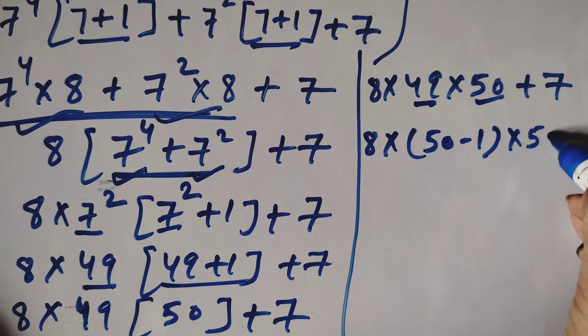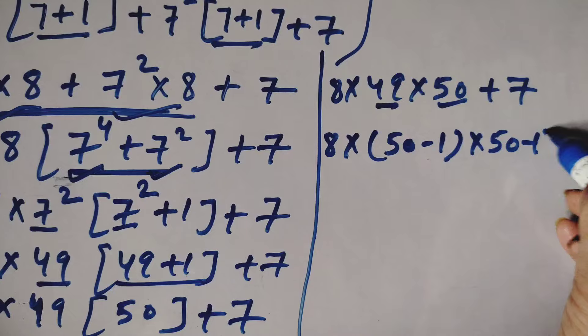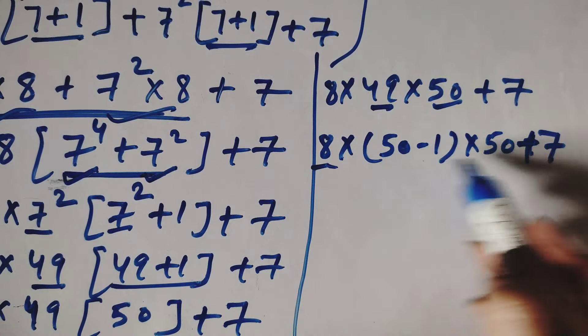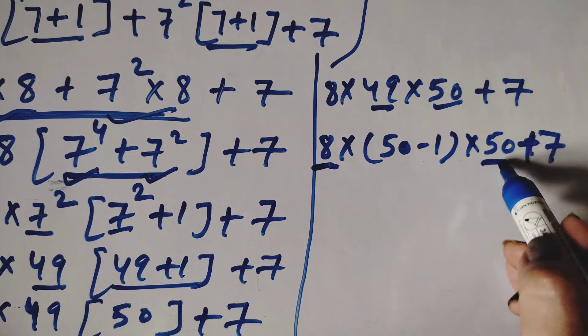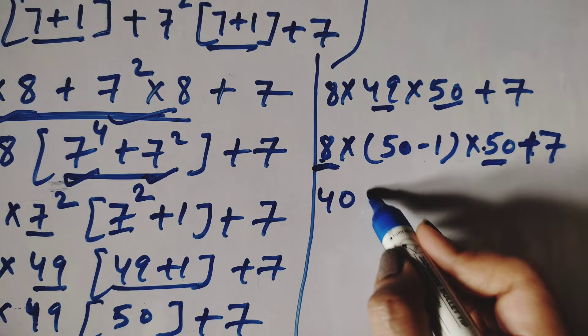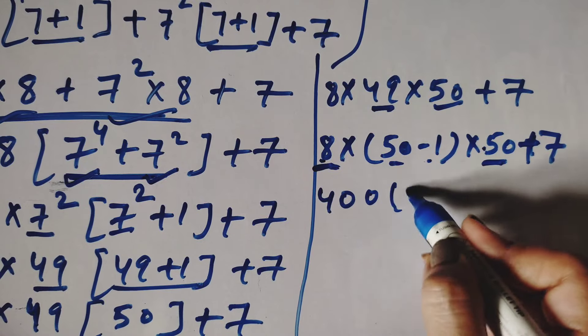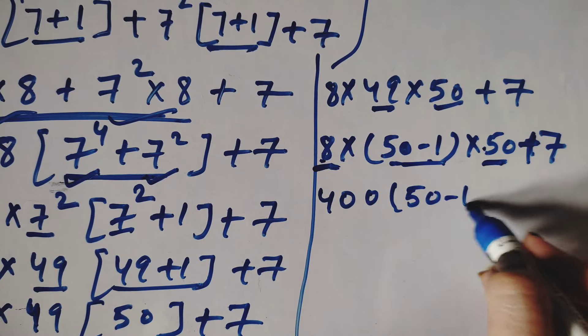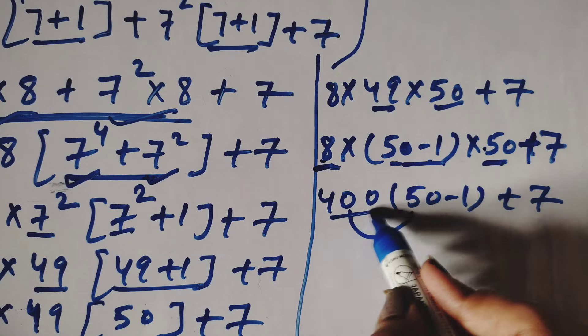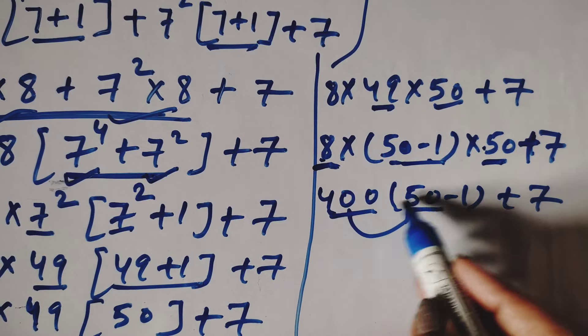You can see 8 into 49 into 50 plus 7, this is our expression. Now we can split this 49 in terms of 50: 49 equals 50 minus 1. So we have 8 times (50 minus 1) times 50 plus 7.